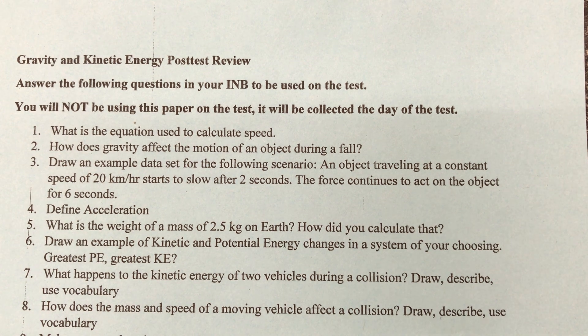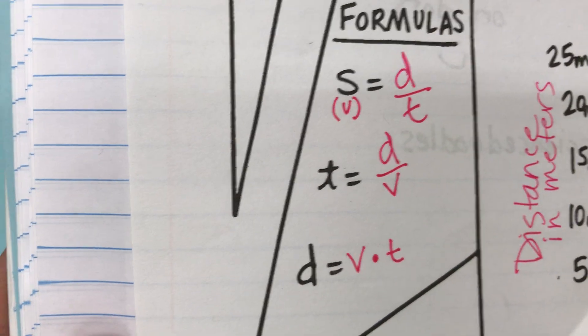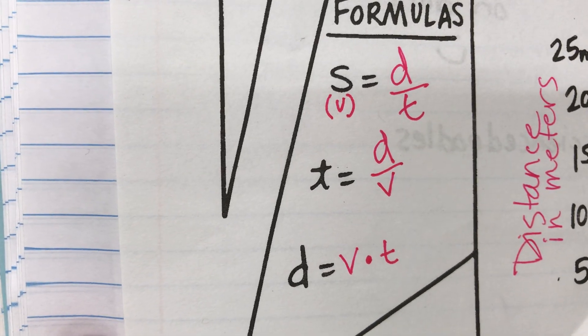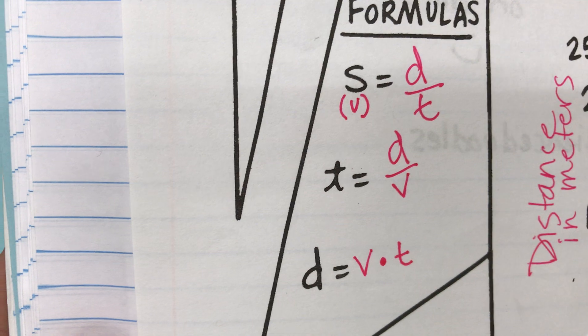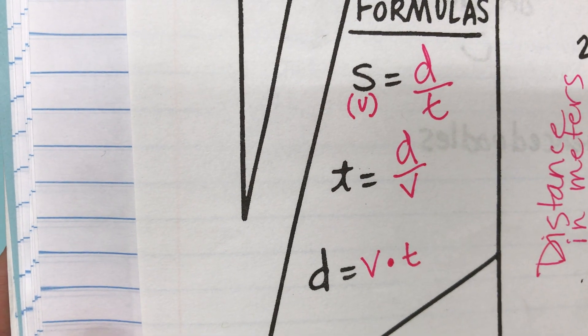What is the equation used to calculate speed? If we go to page 22 in our interactive notebook, we can look that up fairly easily. Speed is equal to distance divided by time. And then below that, you'll see the different variations of the speed formula.